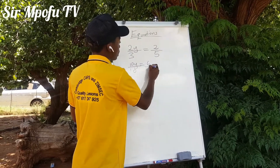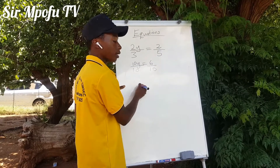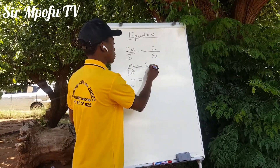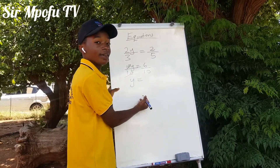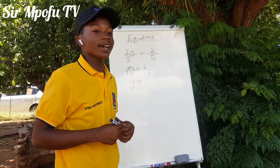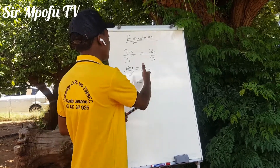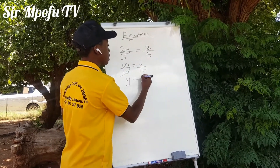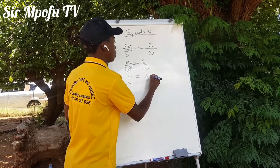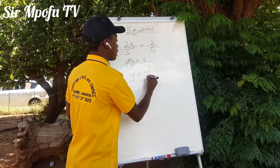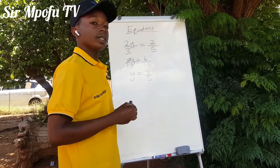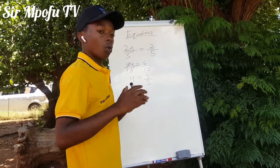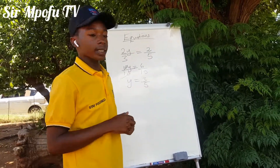2Y times 5 gives 10Y, and 3 times 2 gives 6. So we need to solve for Y. We simplify: dividing both sides by 10, 6 over 10 simplifies to 3 over 5. So Y equals 3 over 5. You can prove it — if Y is the correct answer.